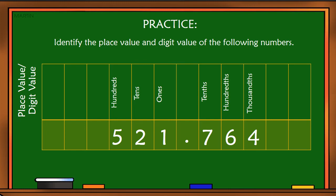Let's do the digit values. One is equal to 1. Two is equal to 20. Five is equal to 500. Let's go to the decimal numbers. Seven is equal to 7 over 10, or 0.7. Six is equal to 6 over 100, or 0.06. And four is equal to 4 over 1,000, or 0.004.